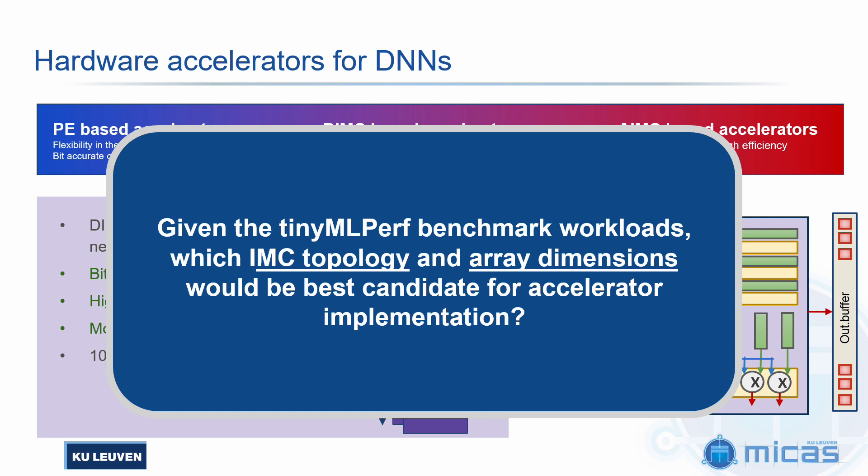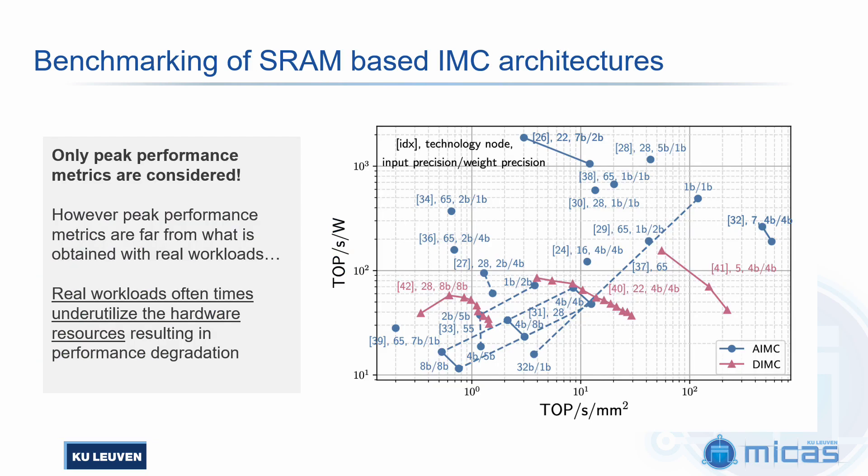Given these premises, the question is: which AMC topology and which kind of array dimensions best suits the TinyML Perf benchmark workloads? In order to answer that, we first tried to see what is the current landscape in terms of these kinds of accelerators. We collected papers from literature, both for AMC and DMC from recent major conferences. We see that AMC basically outperforms DMC by at least an order of magnitude, both in terms of energy efficiency and computational density. However, we have to take into account that most often the values reported in the papers only correspond to peak performances. They assume that the array is fully utilized at all times and every cell is being utilized, and all contributions of ADC and DAC are nicely amortized. But this doesn't really happen with real workloads. With real workloads, we cannot fully map the whole array all the time, and we incur heavy underutilization in a lot of cases — especially considering these very small networks.